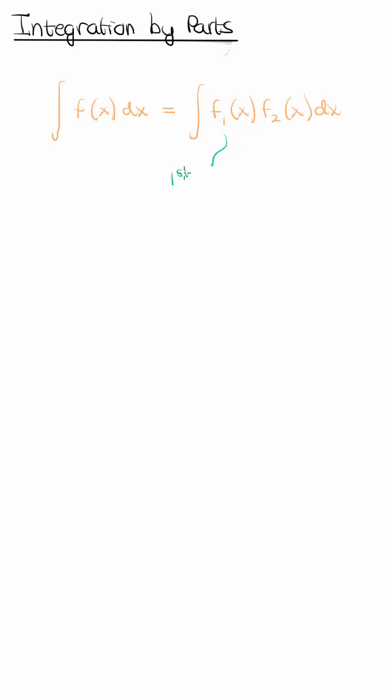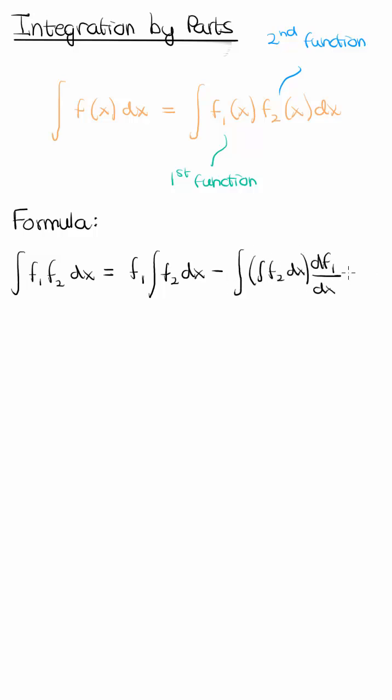In integration by parts you designate one of these as your first function and the other as your second, and once you've done that you apply the integration by parts formula, which is that you have the first function times the integral of the second minus the integral of the integral of the second function times the derivative of the first.